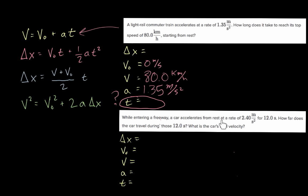It says 'accelerates from rest' — that tells us the initial velocity is zero, just like the previous example. It wasn't moving initially; it was at rest. So let's write that down: initial velocity is zero meters per second. That's not always the case, but it happens in both of these examples. It also says it accelerates at a rate of 2.40 meters per second squared — that's the acceleration. So let's write that down: 2.40 meters per second squared.